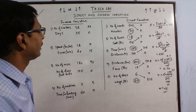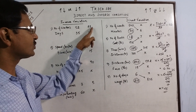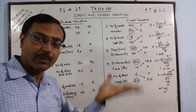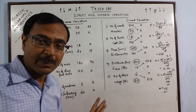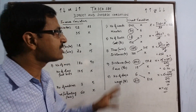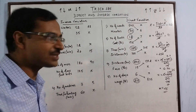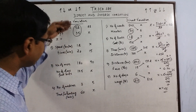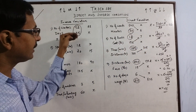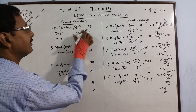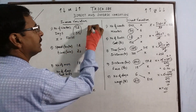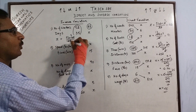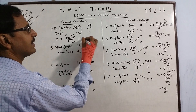Now coming to inverse variation. Here the number of workers is decreasing, so obviously the number of days taken will increase — if workers are less, they will take more days to finish the work. This is inverse variation. In inverse variation, instead of cross-multiplying, we multiply the two known values one below the other and divide by the third known quantity. So: 52 into 35 divided by 28. Cancelling 7 times — 7 fours and 7 fives — and 4 goes exactly 13 times, so 13 into 5, giving 65 as the answer.